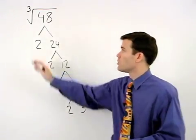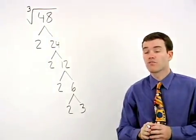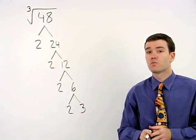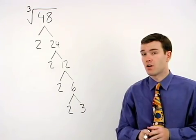The difference with a cube root is that instead of looking for pairs of factors that are the same, we're looking for groups of three factors that are the same.